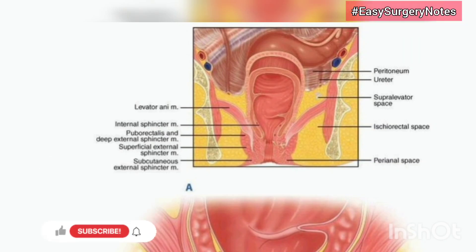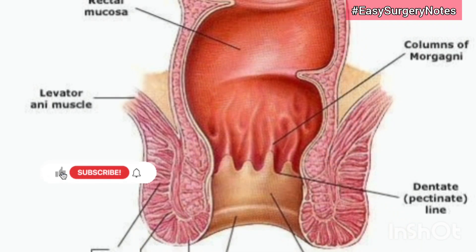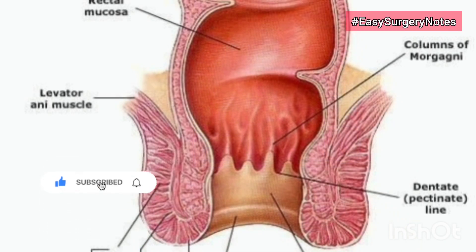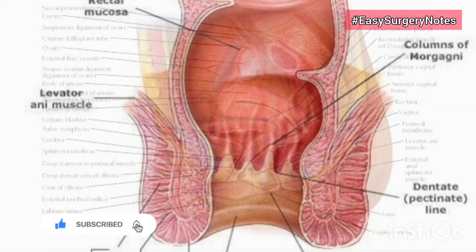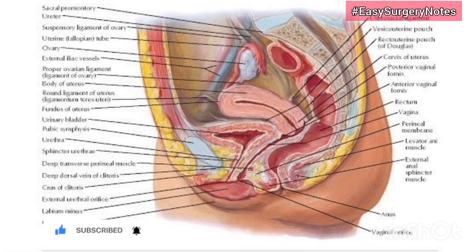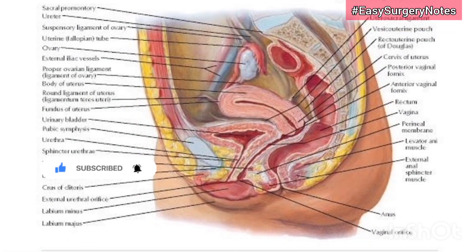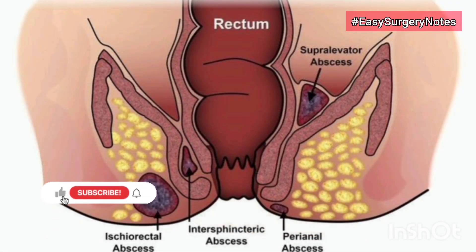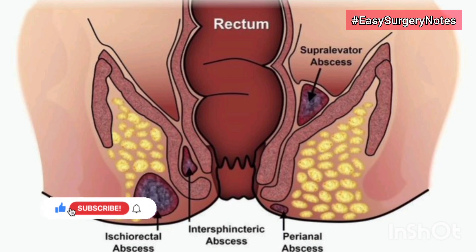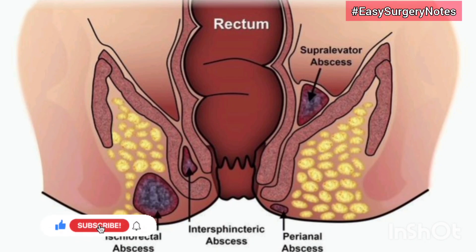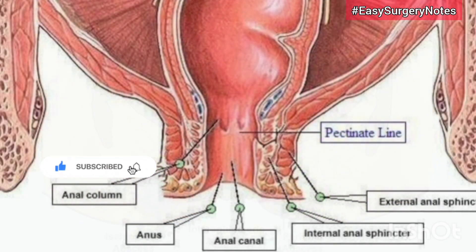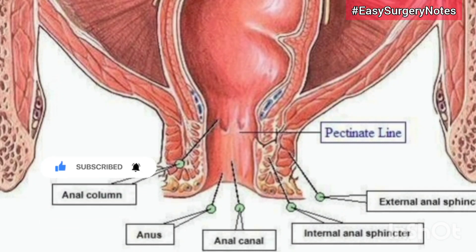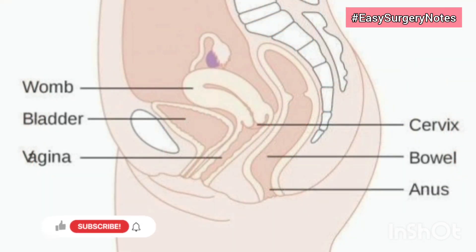The subcutaneous part lies below the level of the internal sphincter and has no bony attachments. Conjoint longitudinal coat: lies between the external and internal sphincters, formed by the fusion of puborectalis with the longitudinal muscle coat of the rectum at the anorectal junction. It becomes fibroelastic downwards and at the white line spreads out fan-like as the corrugator cutis ani, attached to the true anal and perianal skin. It provides a pathway for the spread of perianal infections and marks out tight compartments responsible for intense pressure and pain accompanying many perianal lesions.